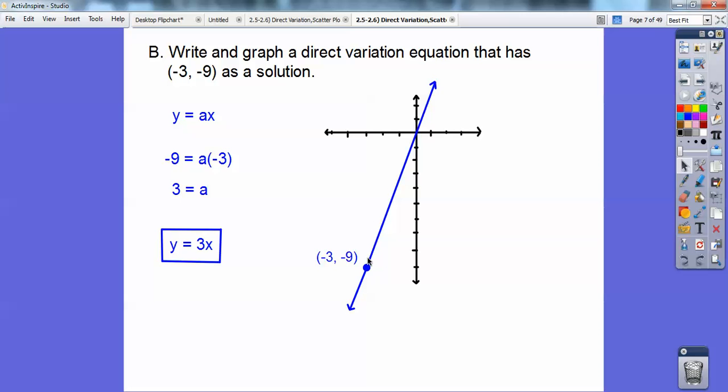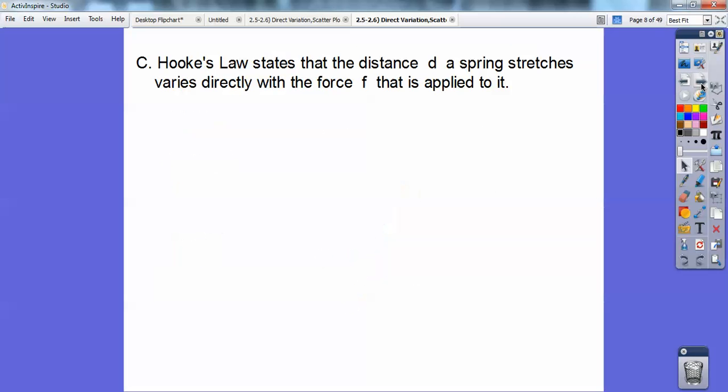So y equals 3x. And you can also see it goes up 9 over 3. So the slope is 3 by rise over run right there. So it's going through the origin.